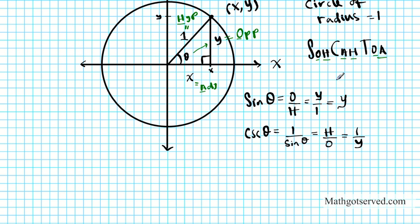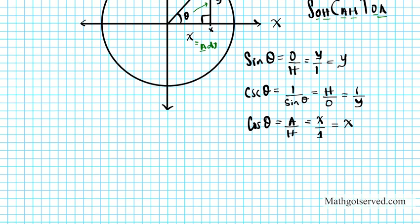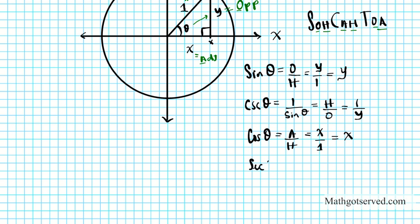Now using CAH: cosine theta is adjacent over hypotenuse. The adjacent is x and the hypotenuse is 1, so x over 1 equals x. Therefore cosine theta equals x. The reciprocal of cosine is secant, so secant theta equals hypotenuse over adjacent, which is 1 over x.